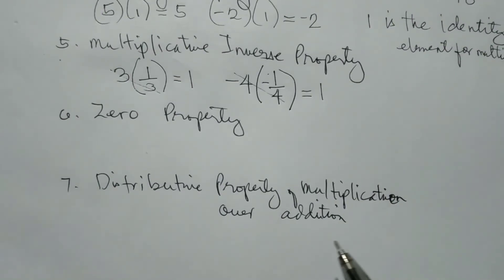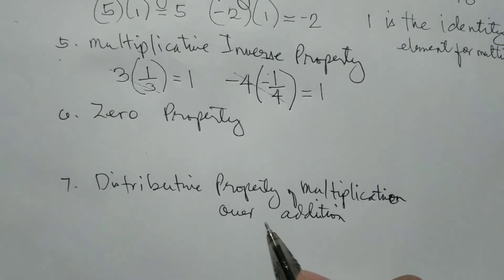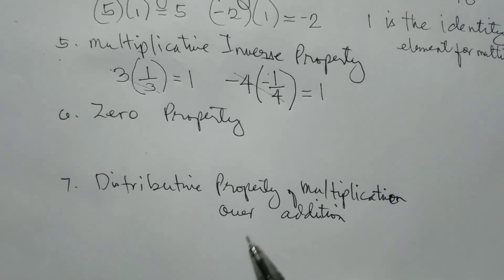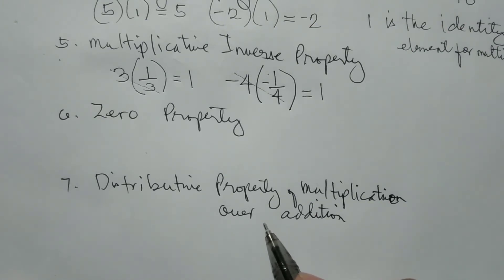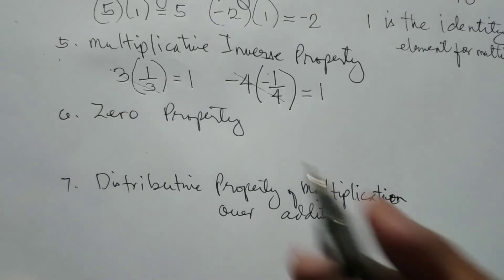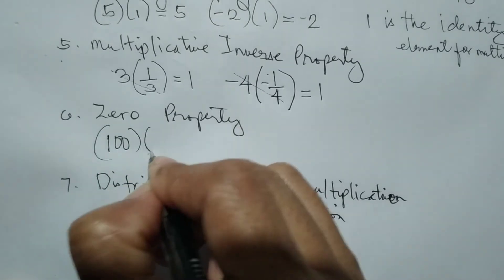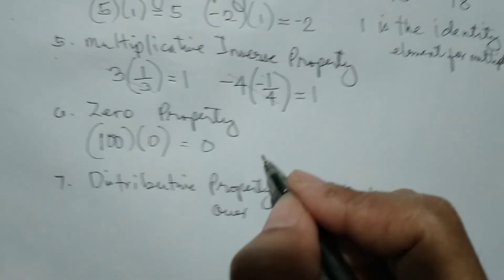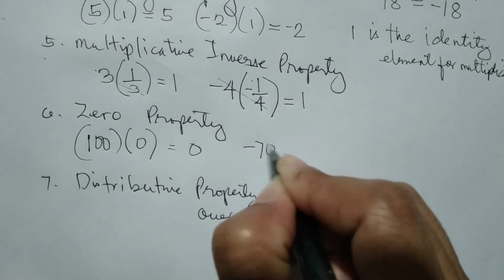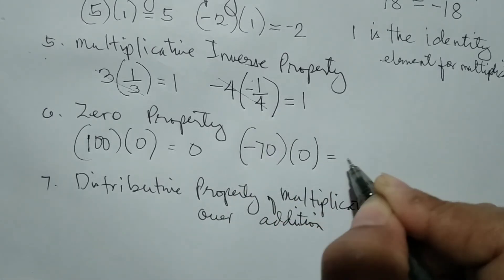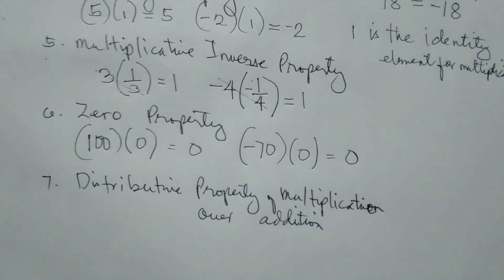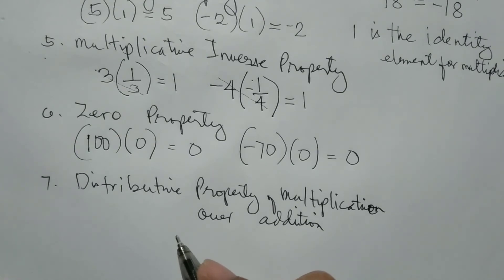Next is the zero property. The zero property states that any number multiplied by 0, no matter how big or small the number is, the product is always equal to 0. For example, 100 multiplied by 0 is always 0. And negative 70 times 0 is also always 0. That is all about the zero property for multiplication.